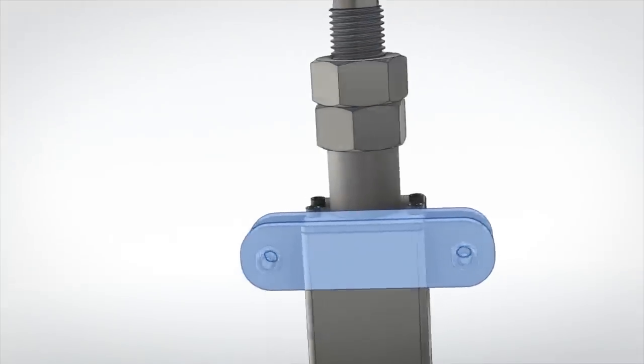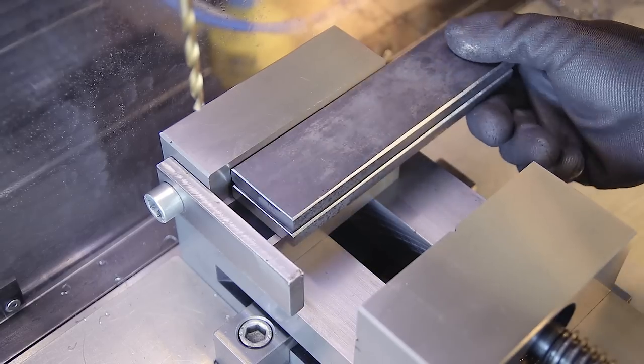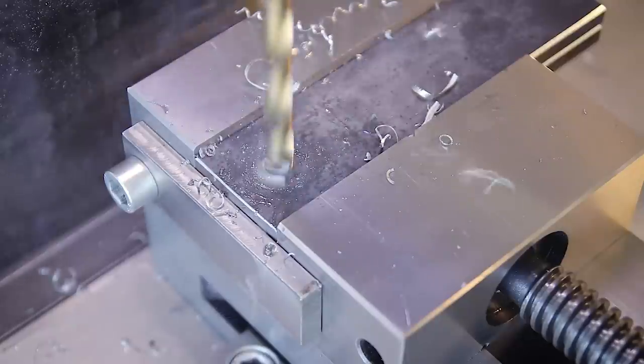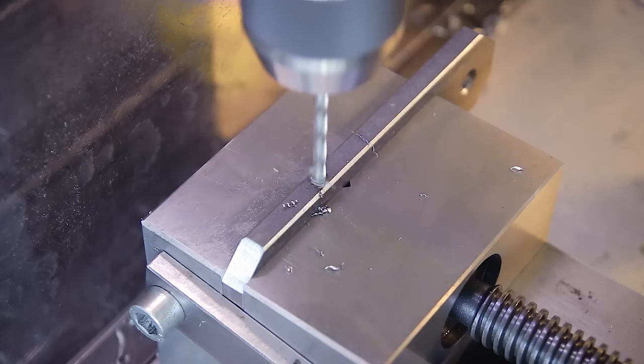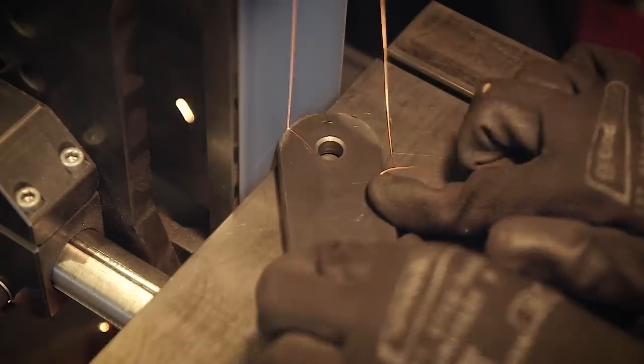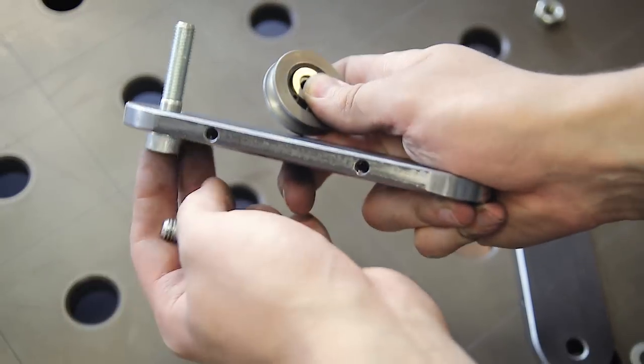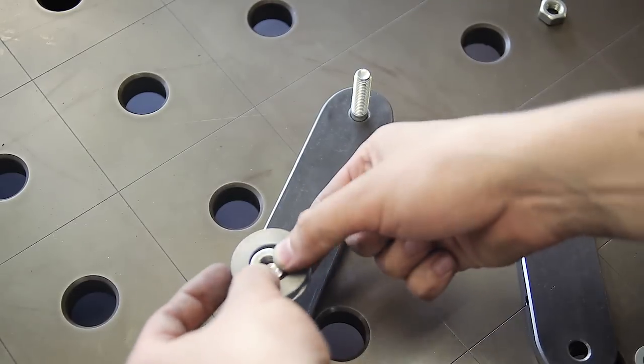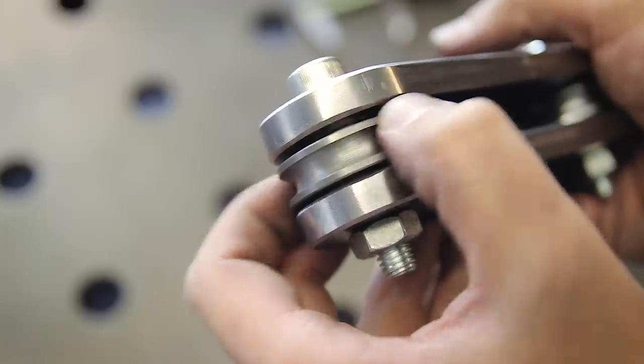With the base done, we can move on to the top portion of the column, starting with these supports for the cable pulleys. I found these on eBay with the ball bearings already installed, but you can probably find something similar at the hardware store or even make them yourself if you have a lathe.